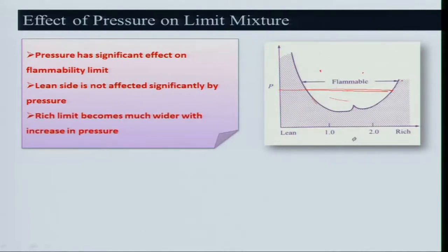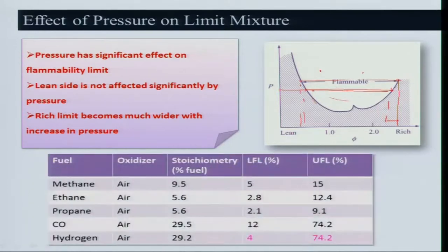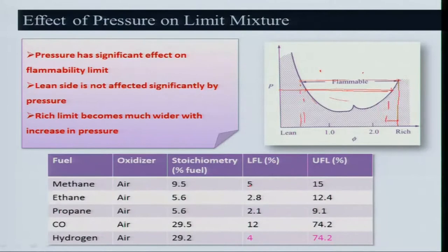The rich limit becomes much wider than the lean side with increasing pressure. Looking at data: for methane-air, stoichiometric is 9.5%; lower flammability limit (LFL) is 5% and upper flammability limit (UFL) is 15%. For ethane-air: stoichiometric 5.6%, LFL 2.8%, UFL 12.4%. For propane-air: stoichiometric 4.0%, LFL 2.1%, UFL 9.5%.